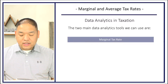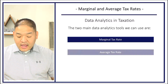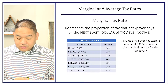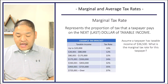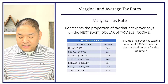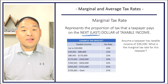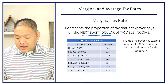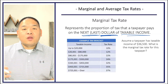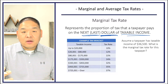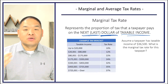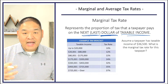That's why we're talking about marginal and average tax rate. The two main data analytic tools here are the marginal tax rate and the average tax rate. The marginal tax rate represents the portion of tax that a taxpayer pays on the next — or last — dollar of taxable income. In other words, if you made one more dollar, how much in taxes would you pay on that additional dollar?